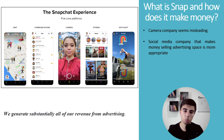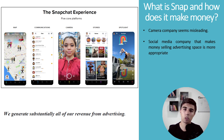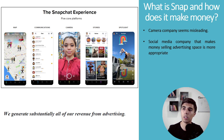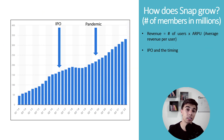What is Snap and how does it make money? Their annual report describes the company as a camera company, but for me a camera company manufactures and sells cameras — and that's not what Snap does. My definition is that it is a social media company that makes money selling advertising space, and they explicitly mention that they generate substantially all revenue from advertising. I simplify this model as: revenue equals the number of users multiplied by the revenue they can bring per user.